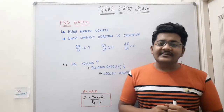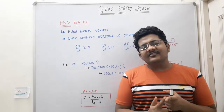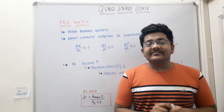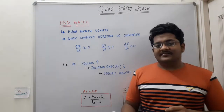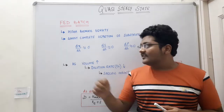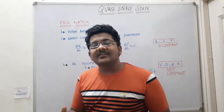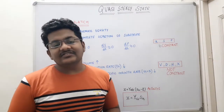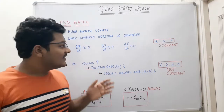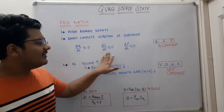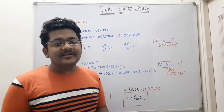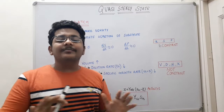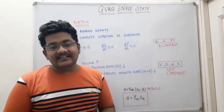The first property of quasi steady state is that there is very high biomass density and almost complete depletion of the substrate. As a result, the rate at which substrate concentration is changing is approximately zero, the rate at which biomass concentration is changing is approximately zero, and the rate at which product concentration is changing is also approximately zero. So biomass, substrate, and product concentrations are all approximately constant under quasi steady state.